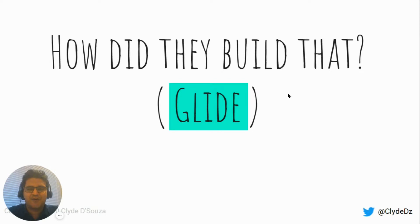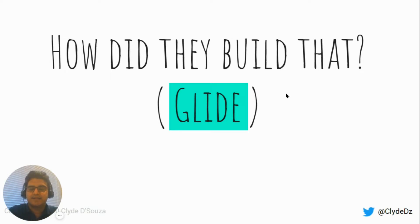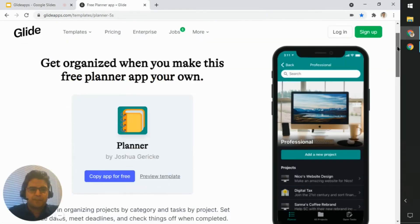Hi everyone, welcome to another episode of 'How Did They Build That' - the Glide edition. In this video series, we take a look at an existing app from the Glide template store and see how it was built. We copy the app into our Glide account and look at each page, every component added, and along the way learn a few things about Glide. The purpose is to understand how to build different apps and inspire you to build your own.